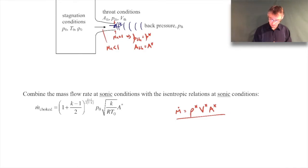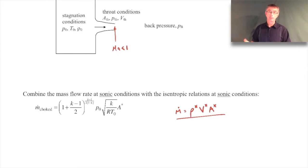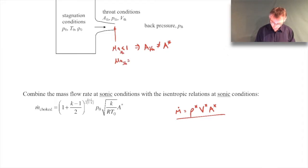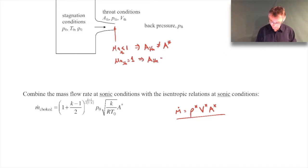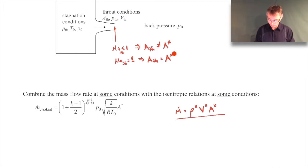Quick clarification: if the Mach number at the throat is less than one, the area at the throat is NOT equal to A-star, because the Mach number is not equal to one there — it's subsonic. But if I keep dropping the back pressure until the Mach number at the throat equals one, then the area of the throat will be equal to A-star. You only have A-star when the Mach number is one. The upstream Mach numbers and the A/A-star values all change as conditions change.